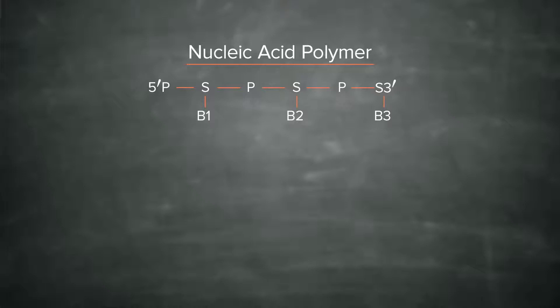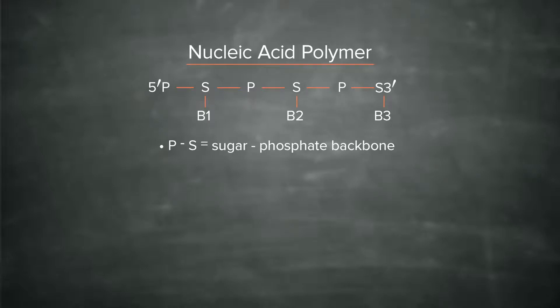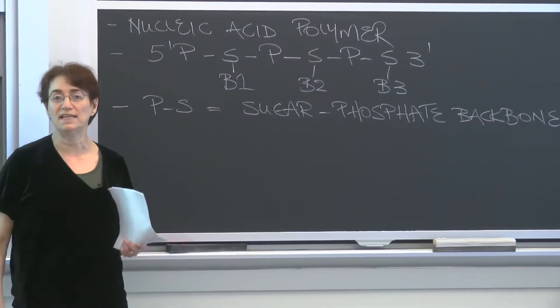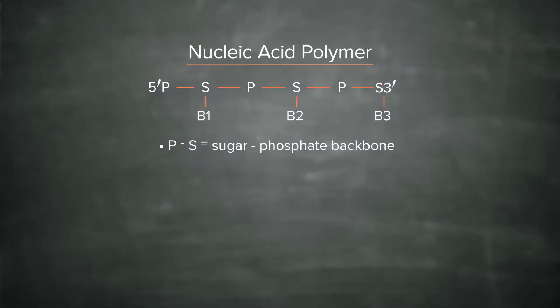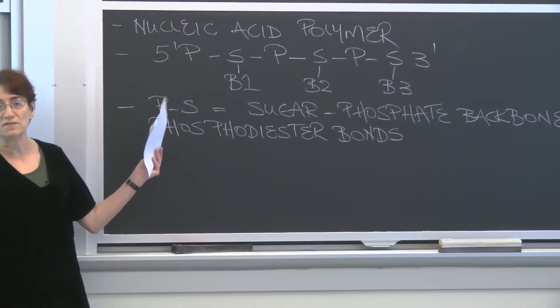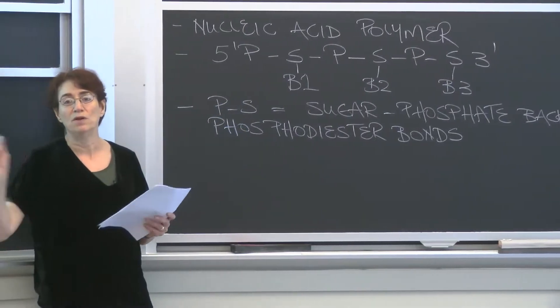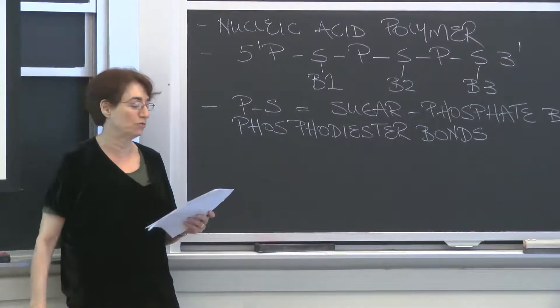So let's look at what I've drawn here. PS refers to a covalently joined sugar phosphate backbone. It's the thing that holds the nucleic acid polymer together. The bonds that join the sugar and the phosphate have a special name. They're called phosphodiester bonds. And they join the phosphate to one of the hydroxyl groups on the sugar.